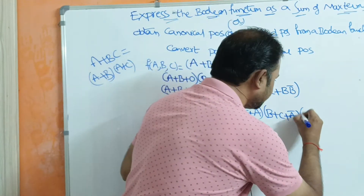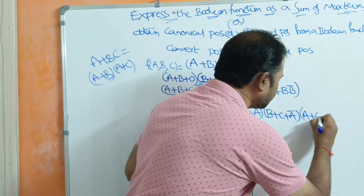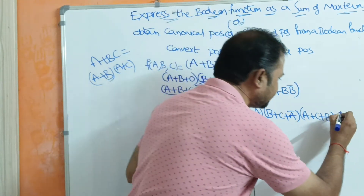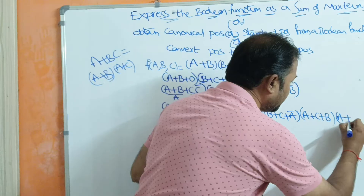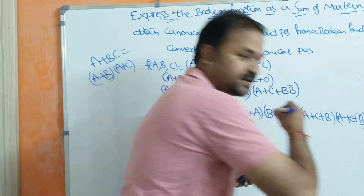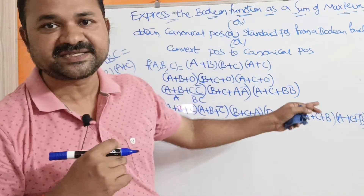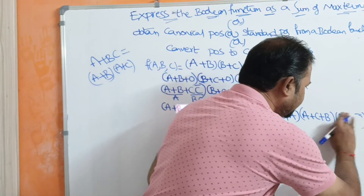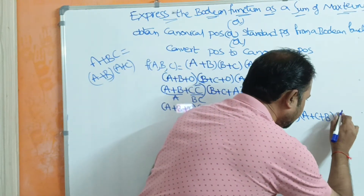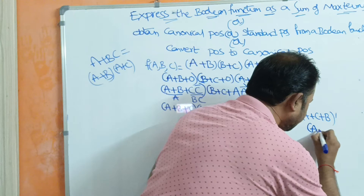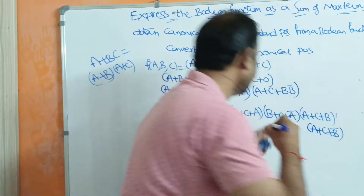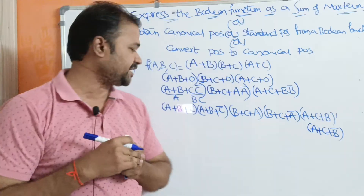For the third term, A + C + B, we can write this as (A + C + B)(A + C + B̄). So we get the expanded term A + C + B̄.